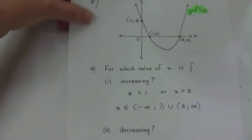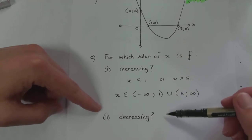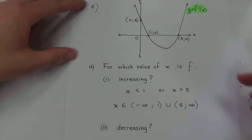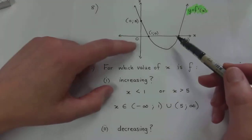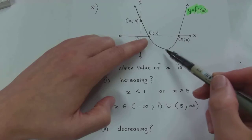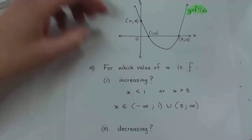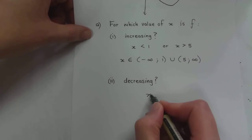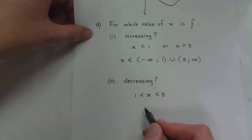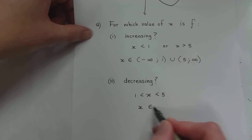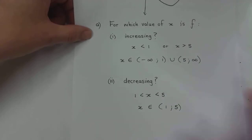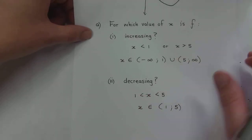For which values of x is f decreasing? The graph of f is decreasing where the graph of the derivative is below the line. This derivative graph is below the line between one and five, which means f is decreasing where x lies between one and five. In interval notation: x ∈ (1, 5).